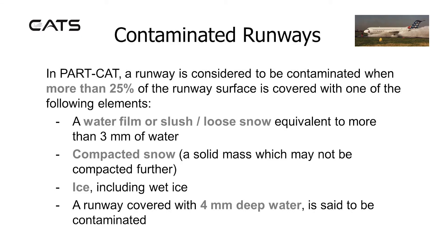Contaminated runways. In Part CAT, a runway is considered to be contaminated when more than 25% of the runway surface is covered with one of the following elements: a water film or slush or loose snow equivalent to more than three millimeters of water; compacted snow, a solid mass which may not be compacted further; or ice, including wet ice.